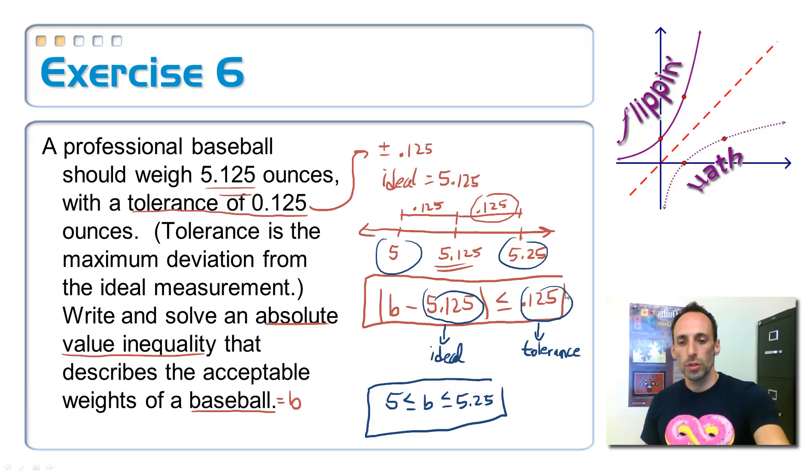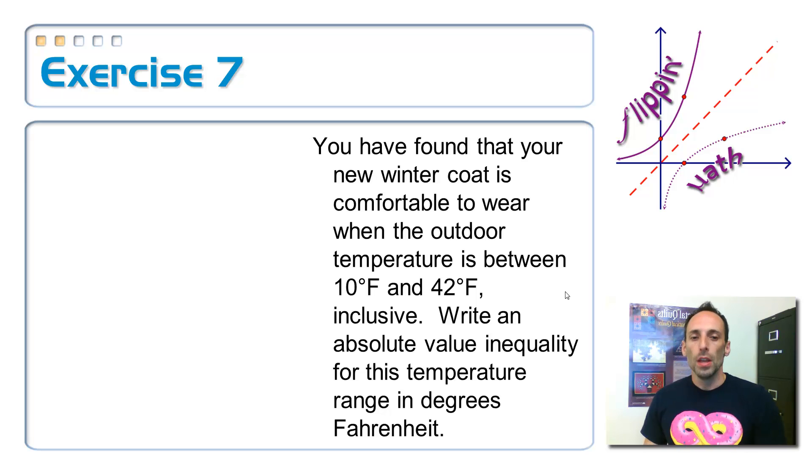Okay. So the next question, question 7, is very similar to this. You found that your new winter coat is comfortable to wear when the outdoor temperature is between 10 degrees Fahrenheit and 42 degrees Fahrenheit inclusive. What does inclusive mean? Inclusive means that it includes the two endpoints. So it includes 10 and it includes 42 and everything in between there. If it had used the word exclusive, it would be everything in between there, but not 10 and 42.